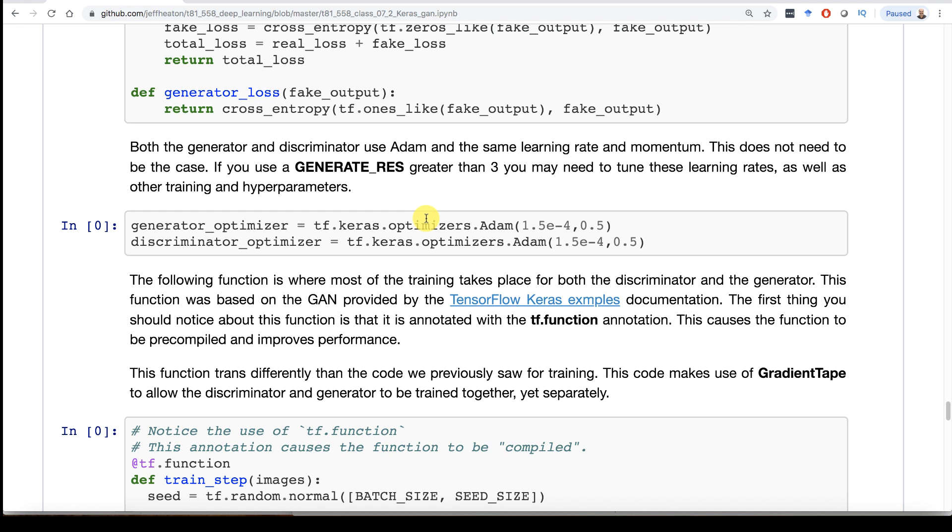Now, one question that I got a lot on the previous version of this is people tried to increase the resolution, do other things. As you increase resolution on these or do other changes, you're going to have to retune. I have these primarily tuned for the different resolutions that I have indicated up higher in the code on the symbolic constant for the magnification factor. But you'll probably have to change these if you make the resolution higher. In particular, you're going to probably have to make these smaller learning rates.